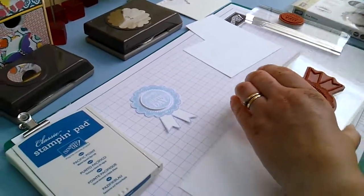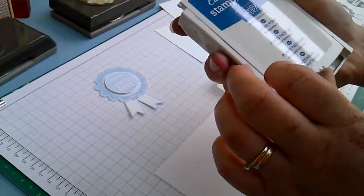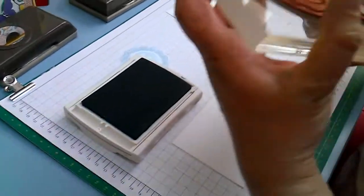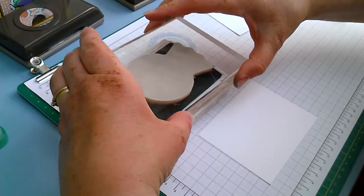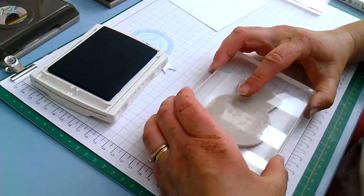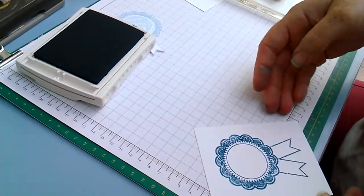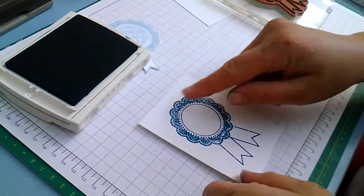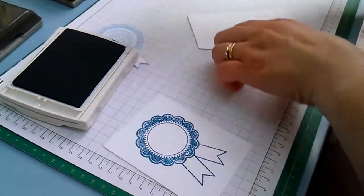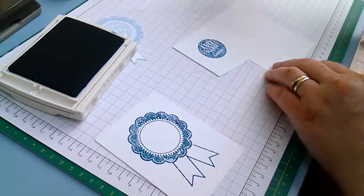Right, first of all I'll be stamping the rosette in Pacific Point. These new inks you only need to do it once really. They're nice and, there you go, that's lovely. I've got a nice distressed ink edge there. While I've got my ink out I will do the Happy Birthday which is in the same set.